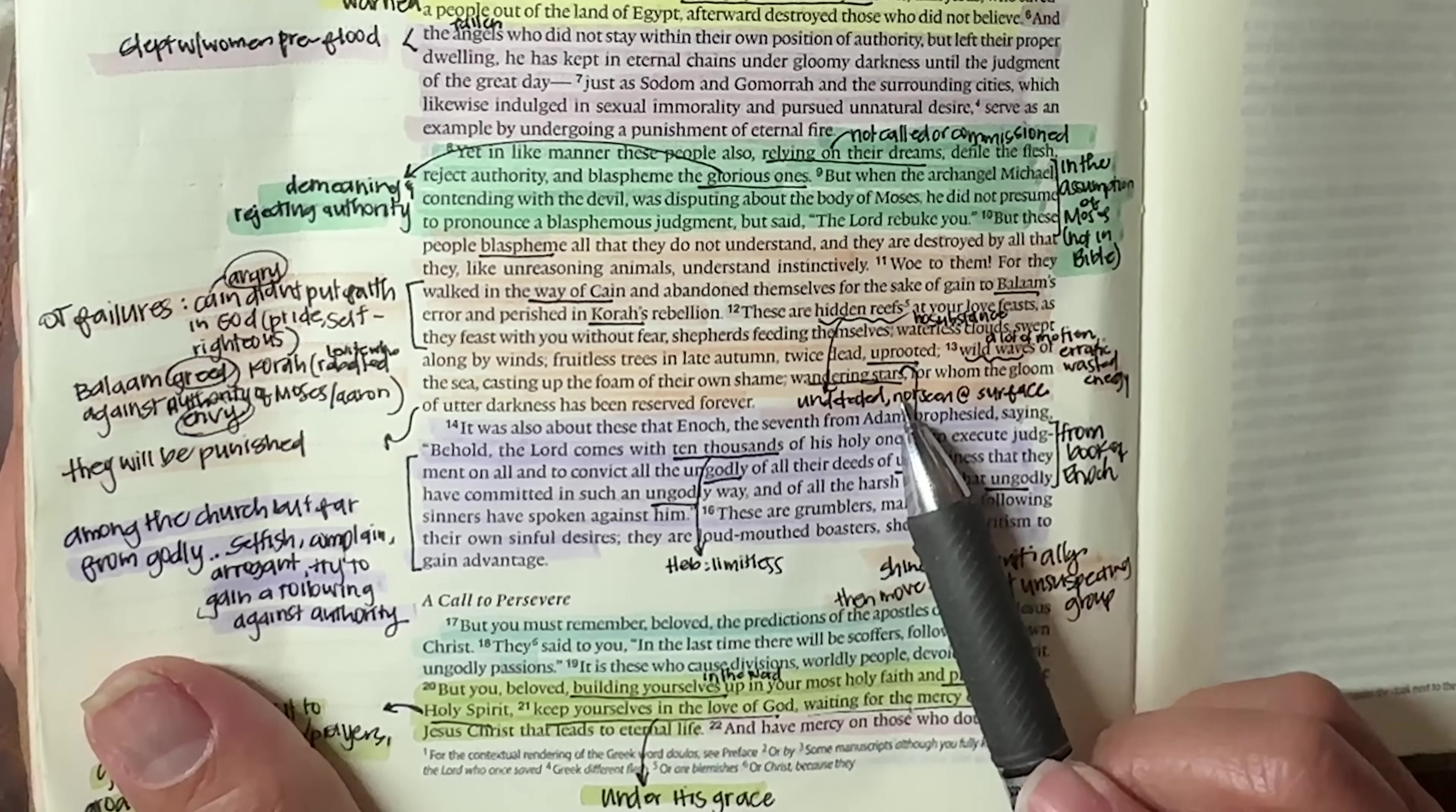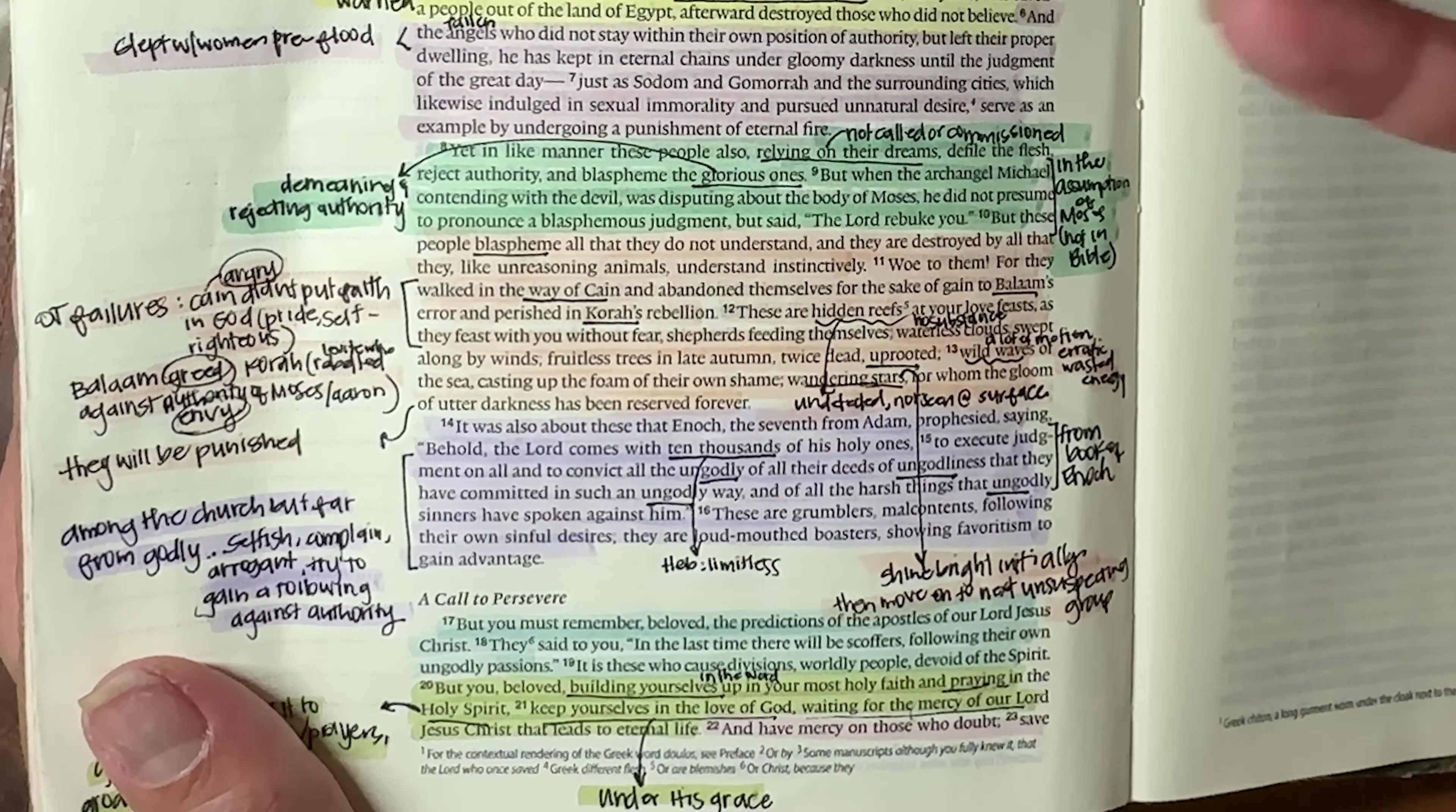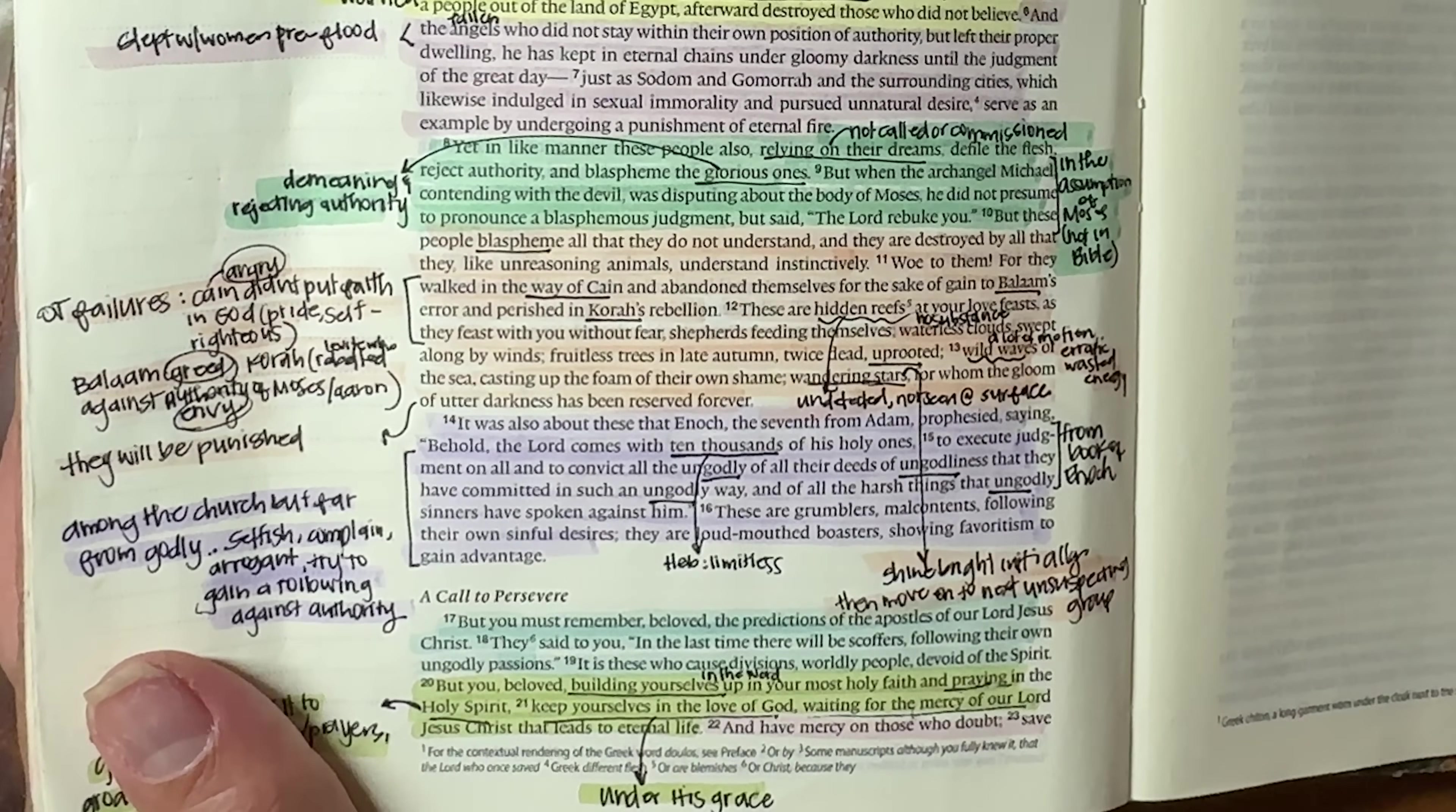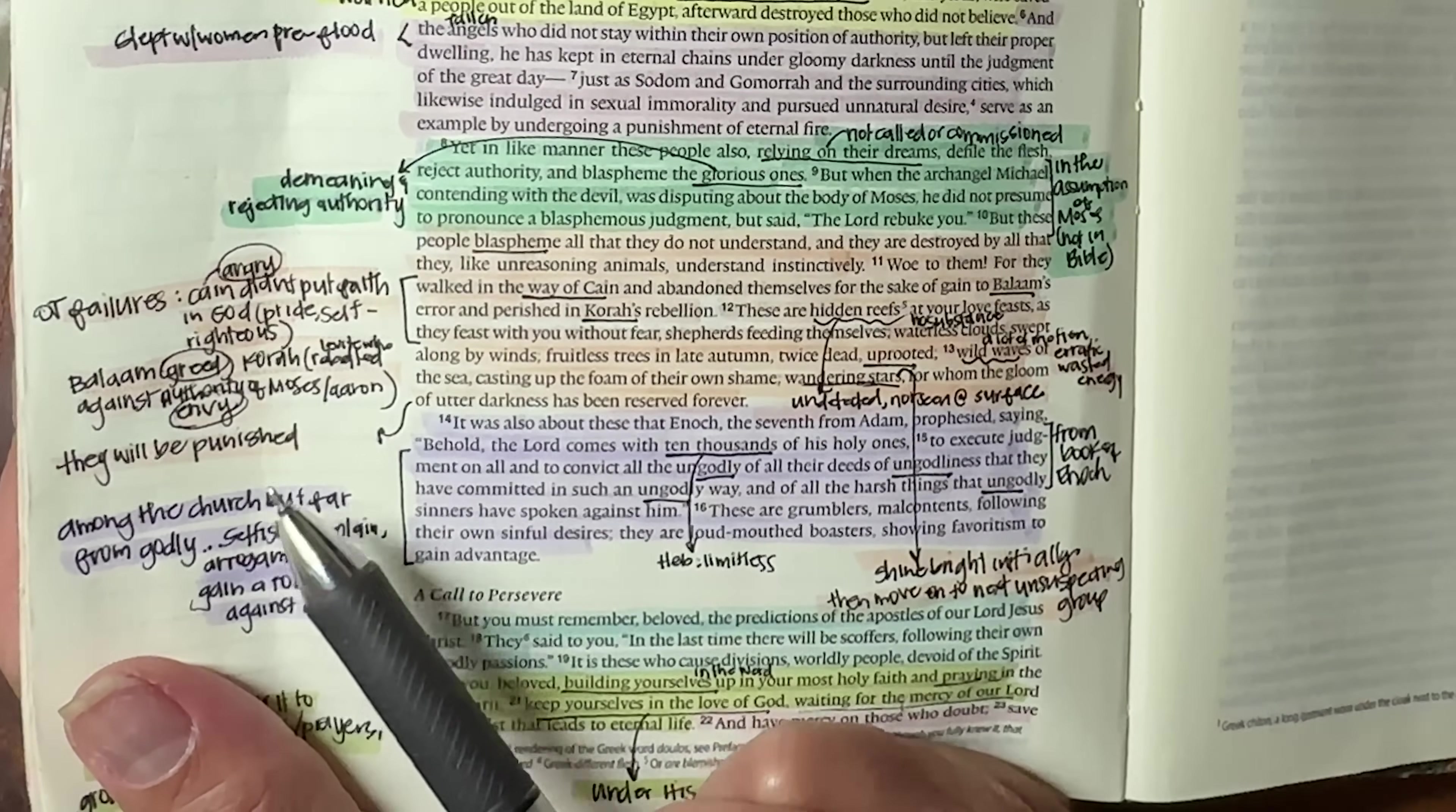Wandering stars. So they may seem like really amazing at first. You know, they might come in shining bright, but eventually as soon as things don't go their way, they're going to fall and they're going to quickly grow dim. For whom the gloom of utter darkness has been reserved forever. So once they burn out, they're basically going to move on to the next unsuspecting group. I've seen this happen. I mean, to the T, it's crazy, but he is saying they will be held accountable. They will be punished.